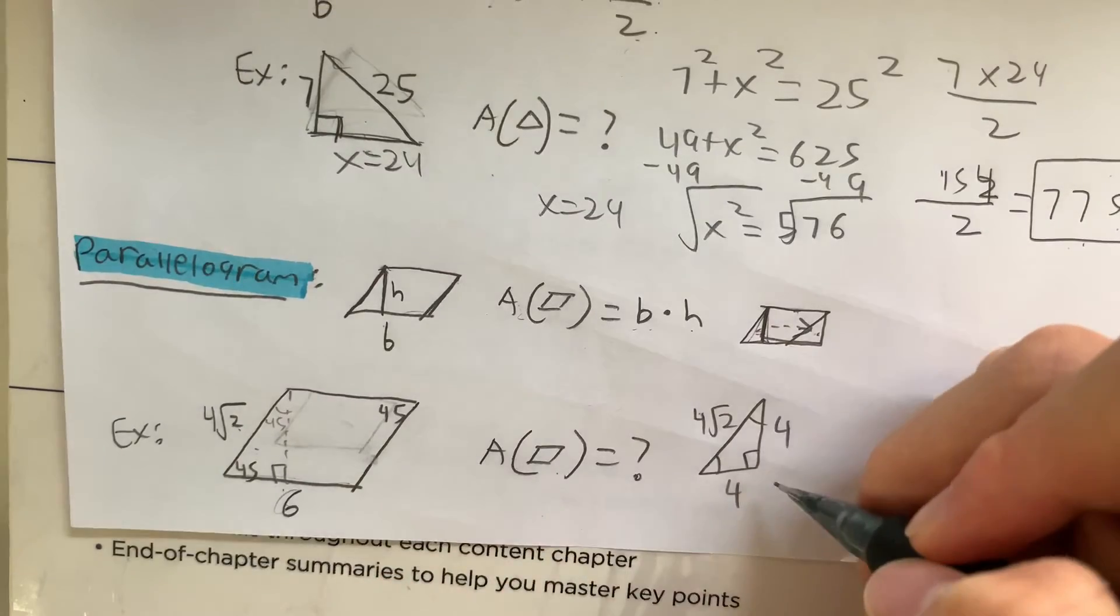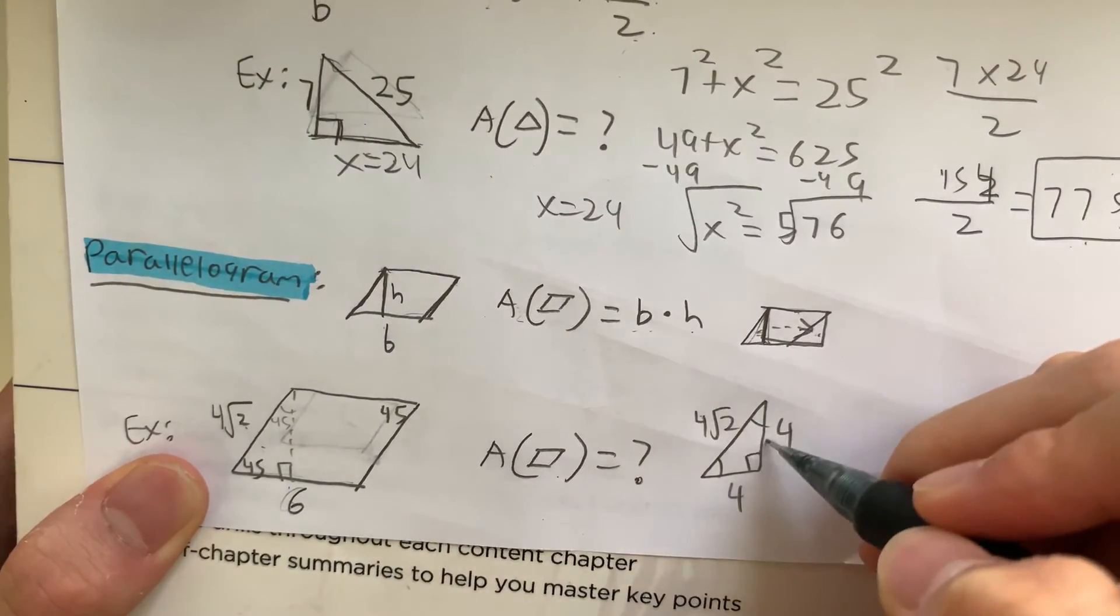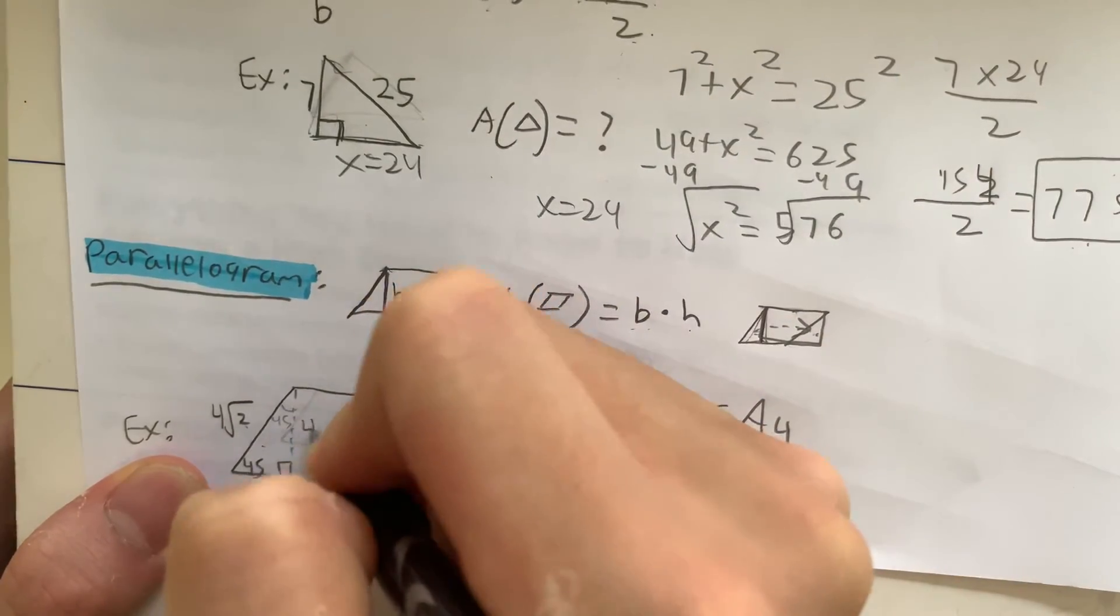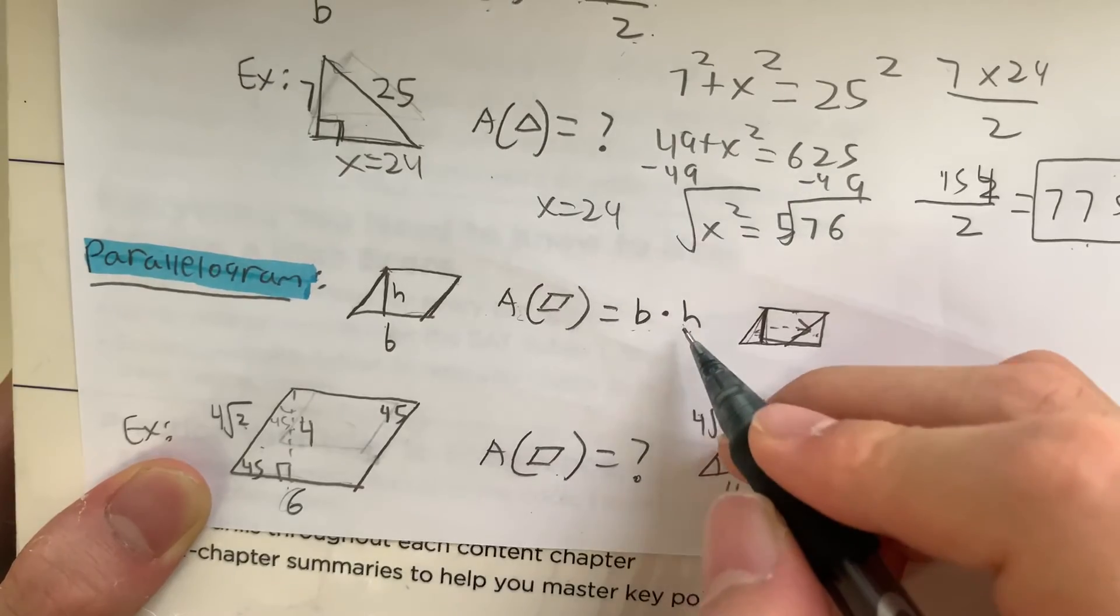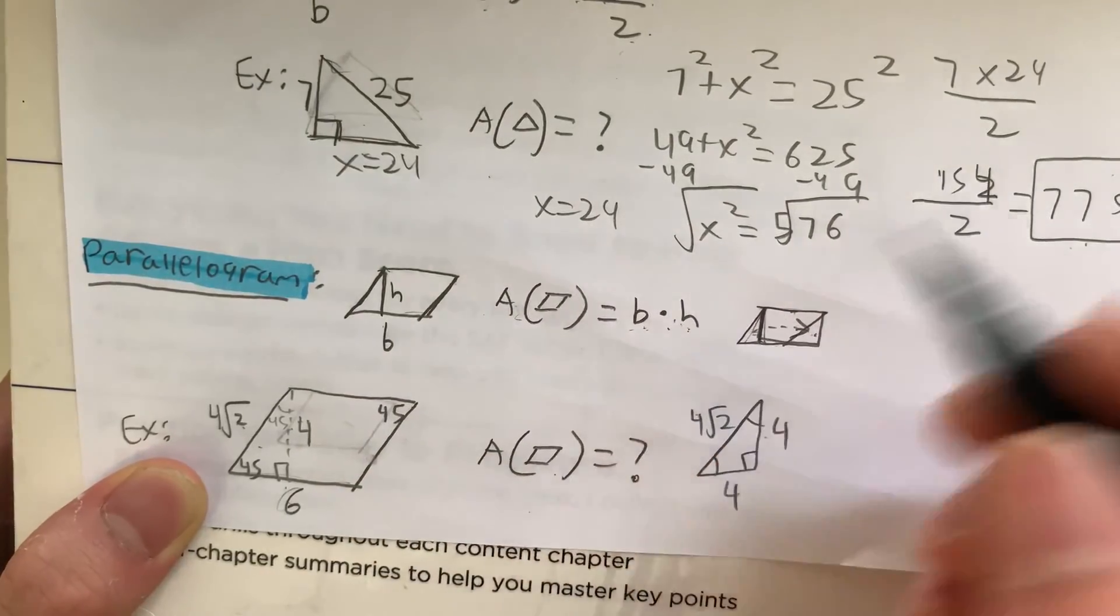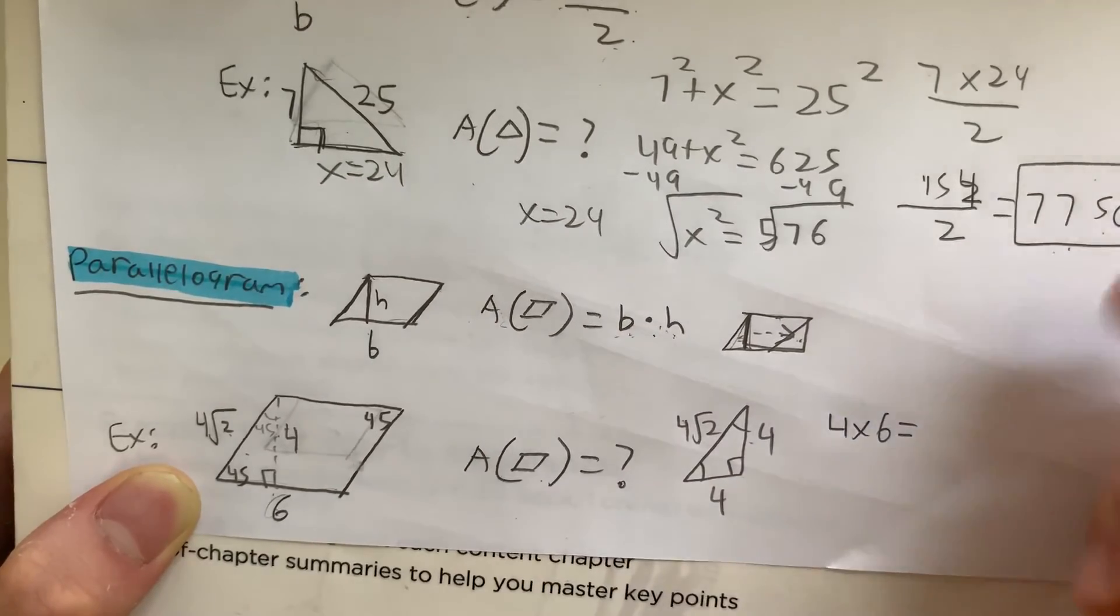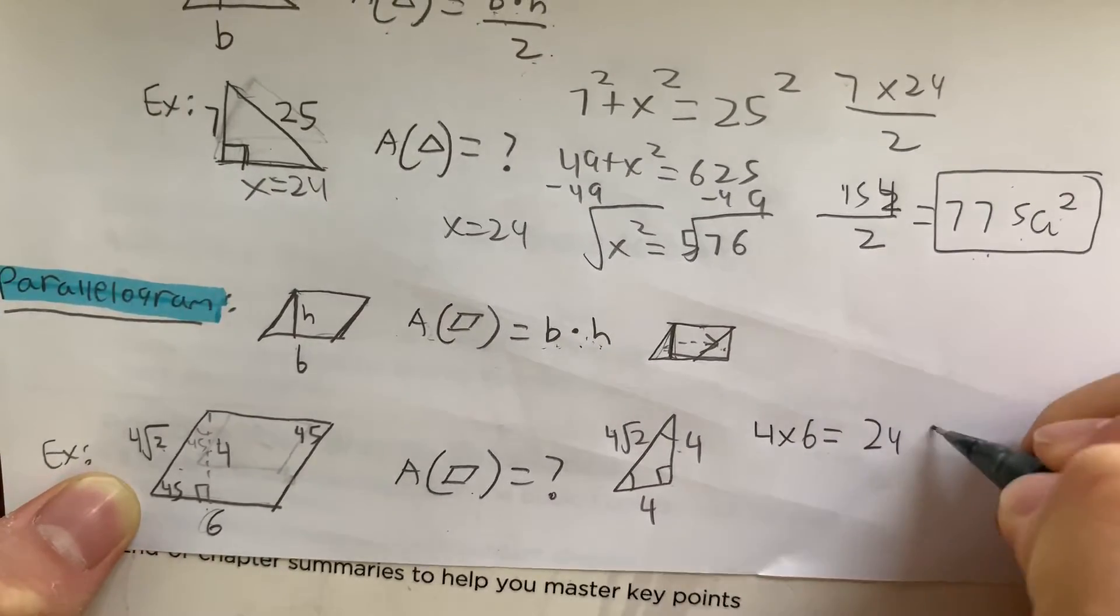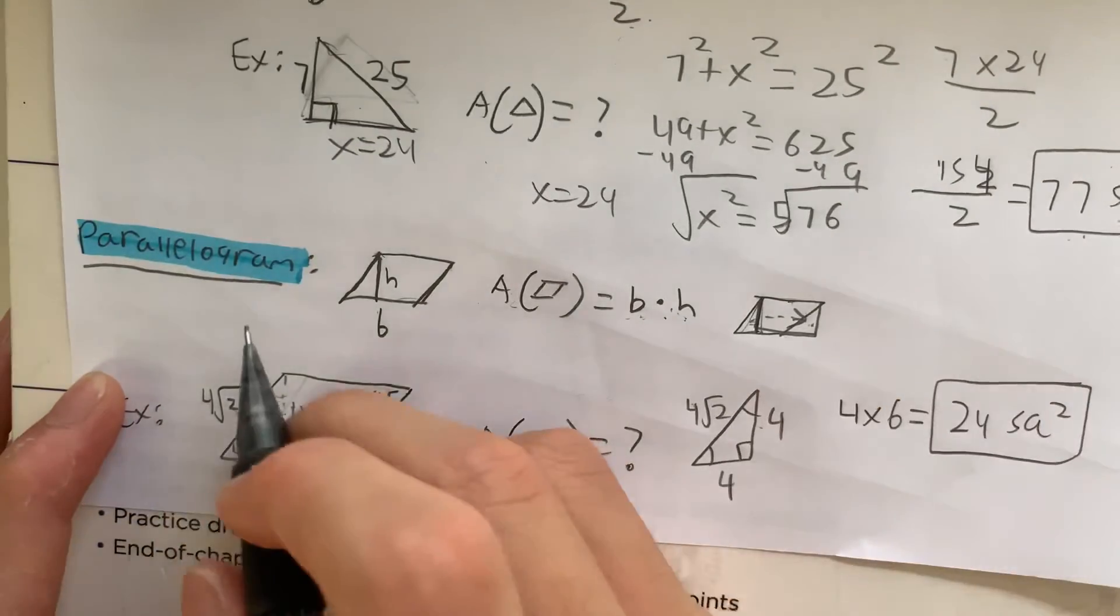Alright guys, if you don't understand, check out my right triangle video where I explain how you derive this. But each side equals 4. So now we have the height being 4. What is the area of a parallelogram? It's base times height. So that's 4 times 6, meaning our answer is 24 square units. That's how you solve for the area of a parallelogram.